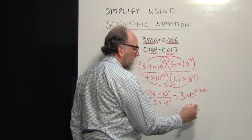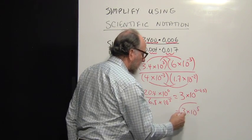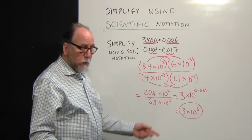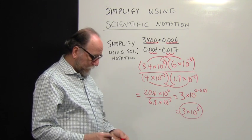Zero minus negative 5 is zero plus 5, which is positive 5. So your answer is 3 times 10 to the fifth, which is in scientific notation.